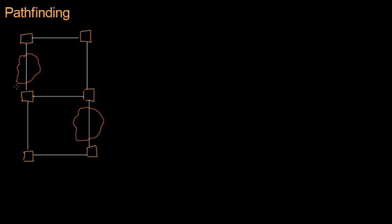Let's construct a graph that identifies these obstacles. To do that, we're going to add edge weights. Most edges will be weight 1, but the edges that go through an obstacle will have a higher weight. This is an obstacle we really want to avoid, so we're going to give it something really high, like 8. In general, you want higher values to represent less desirable places to go through.